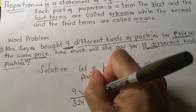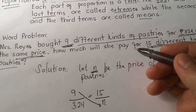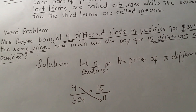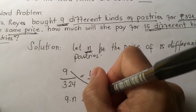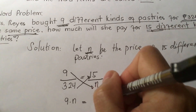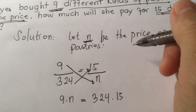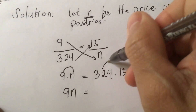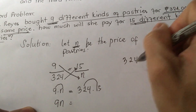First, I'm going to do 9 times n using a dot — the dot is a symbol for multiplication. So 9 times n equals 324 times 15. We're going to multiply. The left side gives us 9n, and the right side is 324 times 15. I'm going to show you how to multiply this.